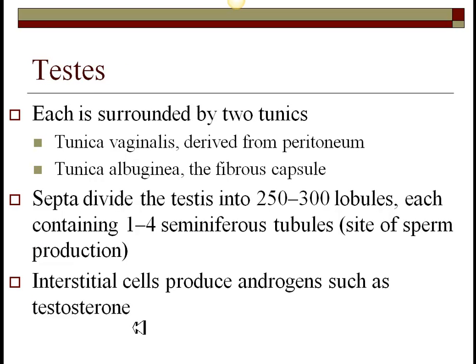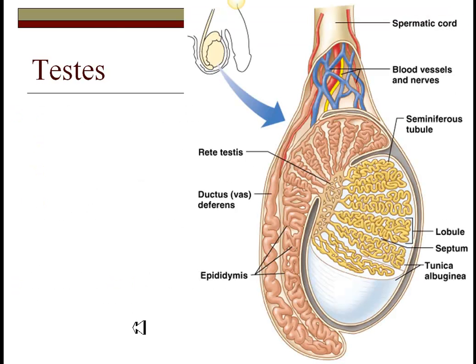Each of the testes is surrounded by two tunics: the tunica vaginalis and tunica albuginea, also called the fibrous capsule — these are tough connective tissue coatings. The tunica albuginea actually divides the testes into lobules, 250 to 300 of them. These contain little tiny coiled-up tubes where spermatogenesis is going to occur, called seminiferous tubules. In between these tubules you'll find interstitial cells, where you produce the major hormones — the androgens such as testosterone.